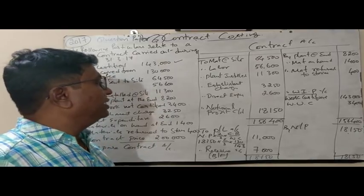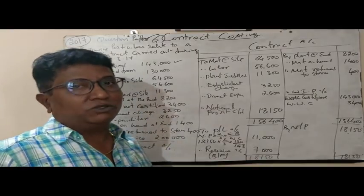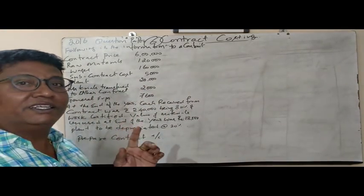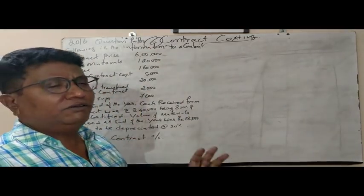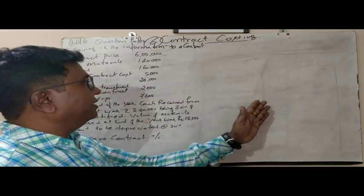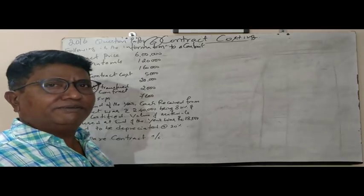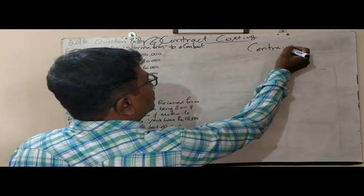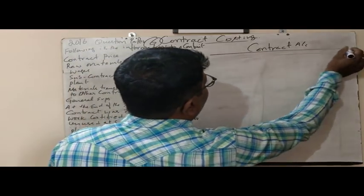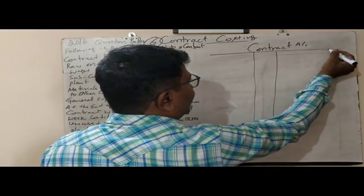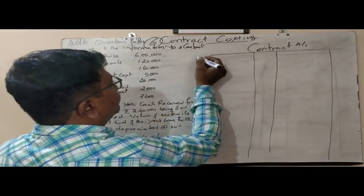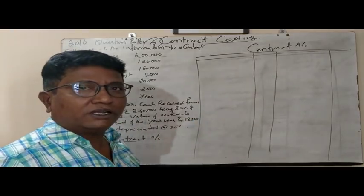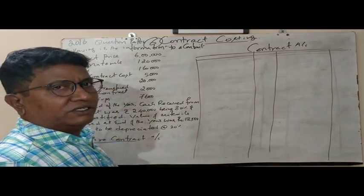I hope all of you understood. I will be coming back with the 2016 question paper in the next video. Now, for the 2016 question asked by Bangalore University, the same type of problem is there. When preparing a contract account, the debit side will have expenses and the credit side will have incomes. The contract price is not required for preparing the contract account itself. The major expenses are raw materials, labour, and direct expenses.